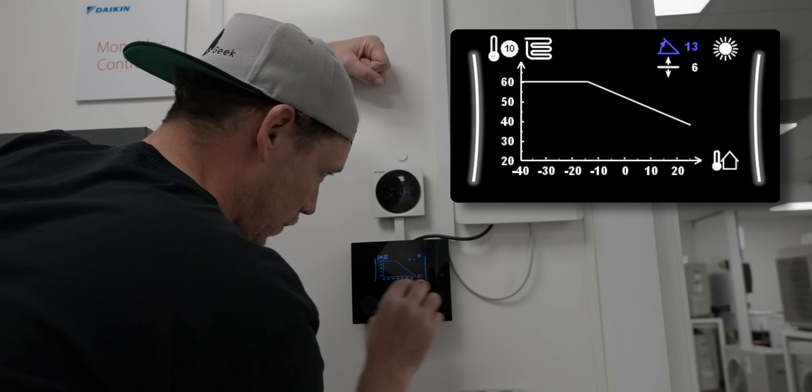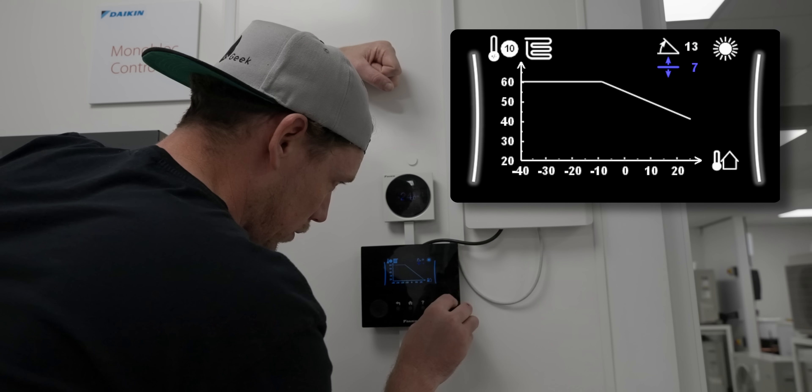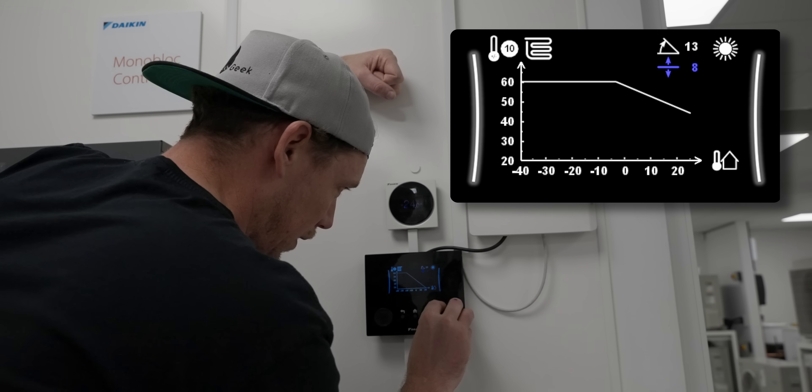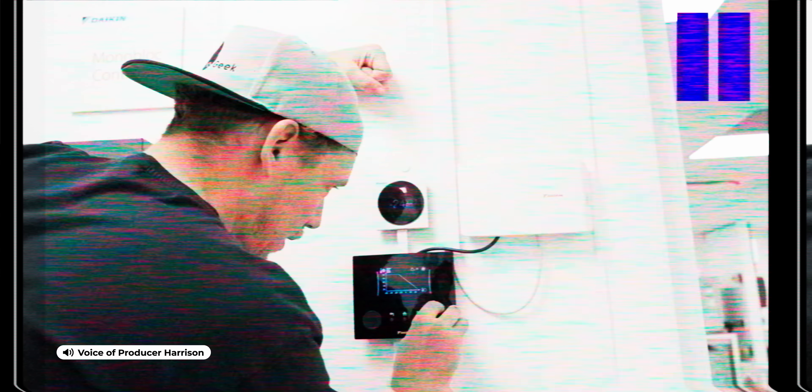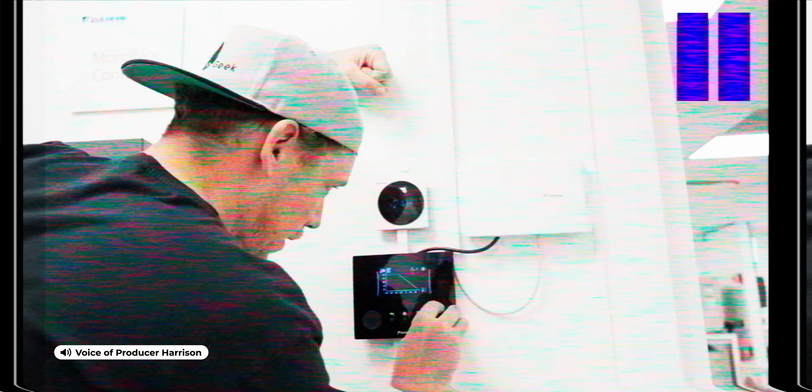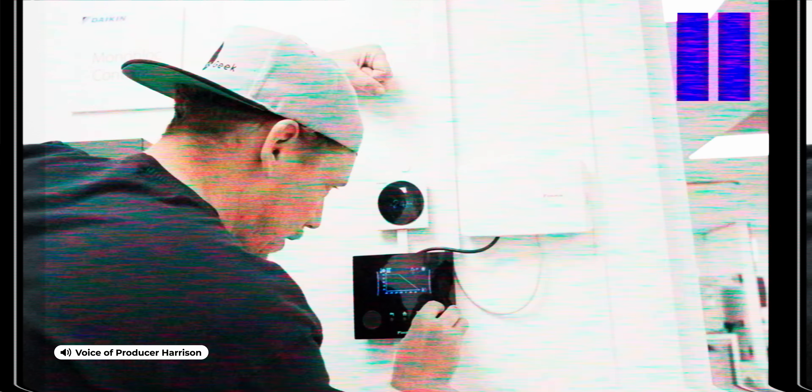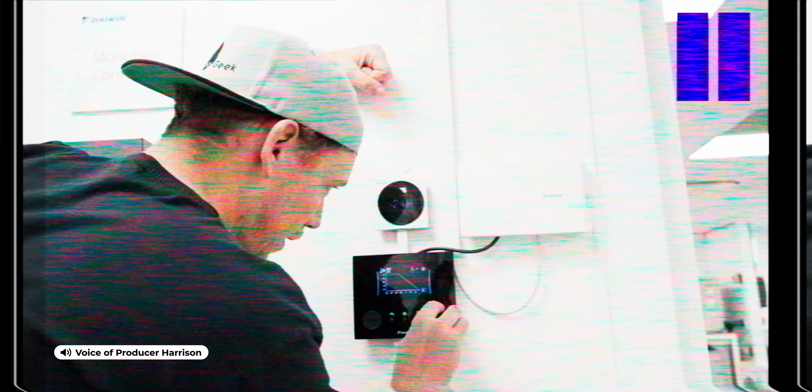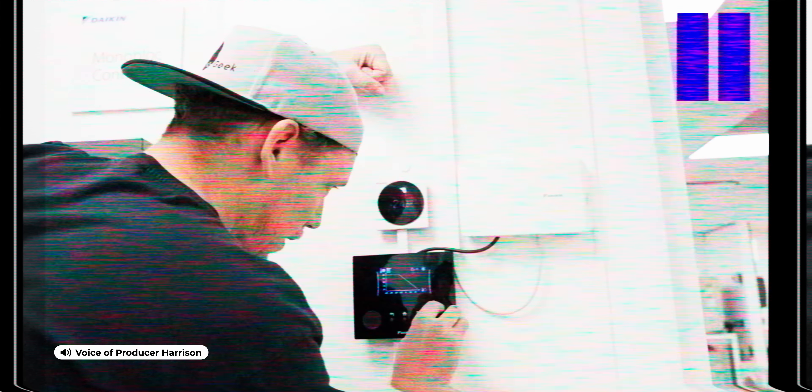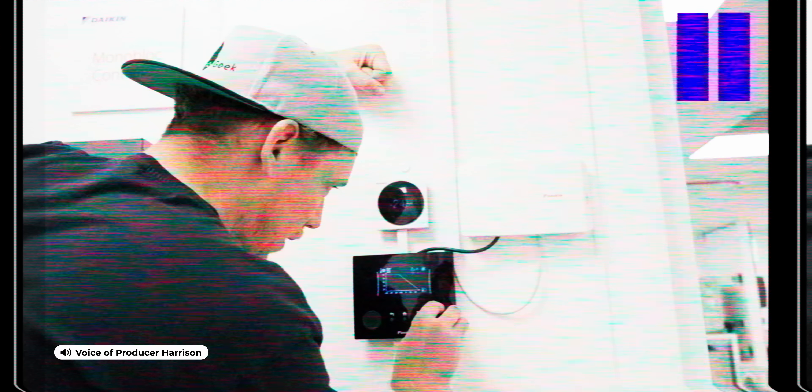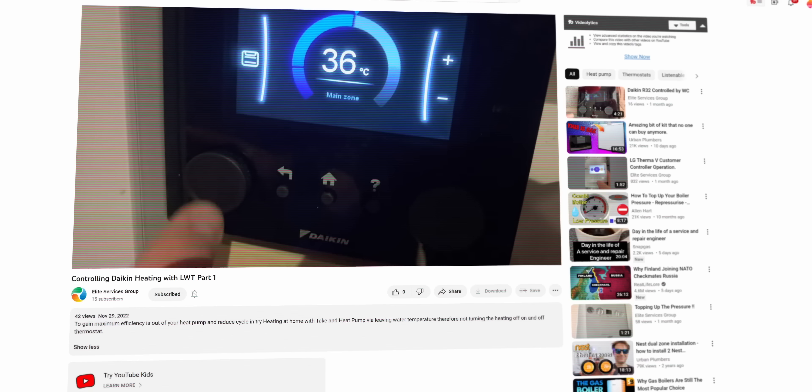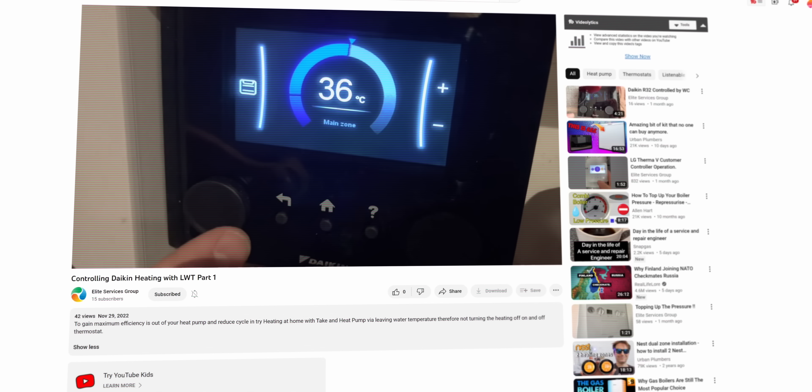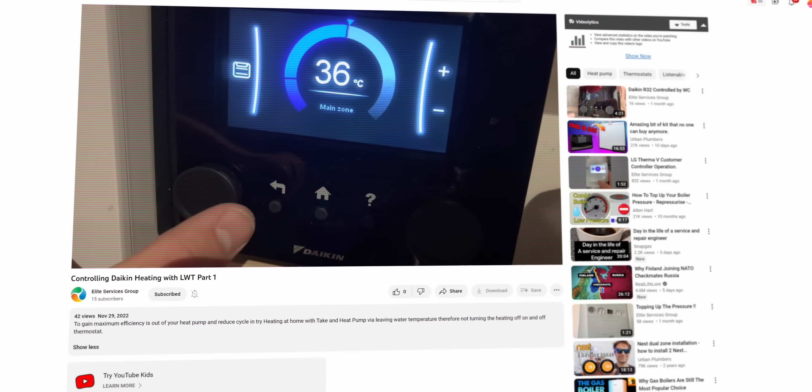Hi guys, producer Harrison here. In the next part of this video, Adam talked us through how to set a nighttime setback temperature. But while we were editing, James, one of our highly skilled vetted and verified Heat Geek Elites, uploaded his own video on the Daikin controls and we thought that his instructions were fantastic.